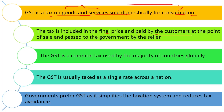The tax is levied on the final price of the product, and the customer pays it at the point of sale. Once the customer has paid the tax to the seller, the seller will pass that amount to the government.